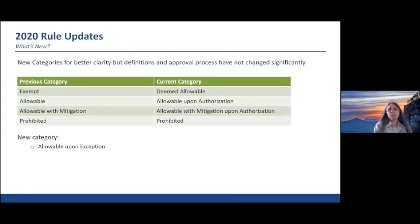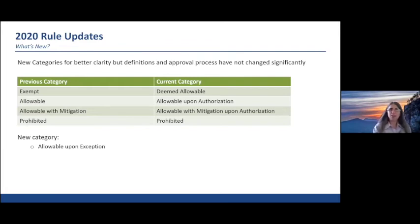We also changed the table of uses categories. Some of the category language was confusing to users, so we came up with better terminology. Everything that was previously called "exempt" is now called "deemed allowable" — a term more familiar in the permitting world, like "deemed permitted" or "deemed approved." We clarified that "allowable" means allowable upon receiving authorization from the authority. And we created a new category called "allowable upon exception."